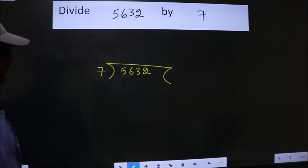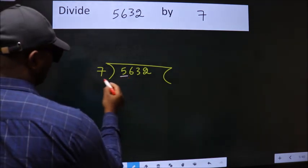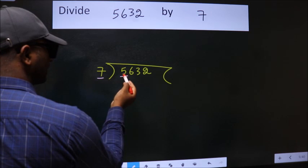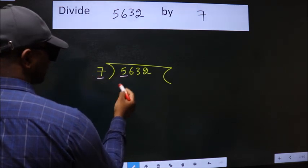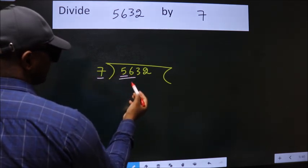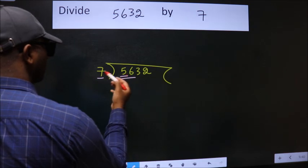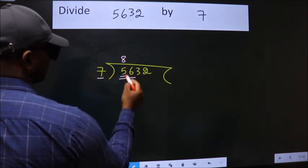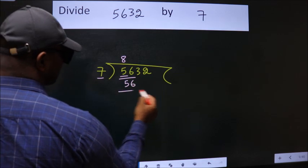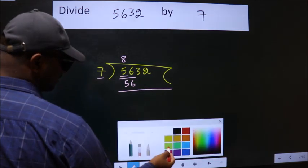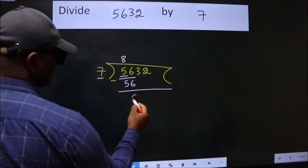Next, here we have 5. Here 7. 5 is smaller than 7, so we should take 2 numbers: 56. When do we get 56 in the 7 table? 7 times 8 is 56. Now we should subtract. We get 0.